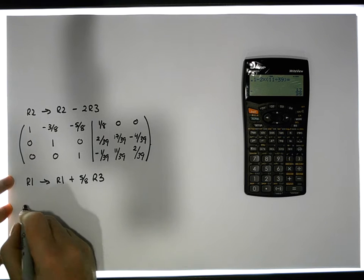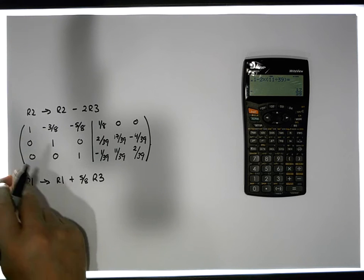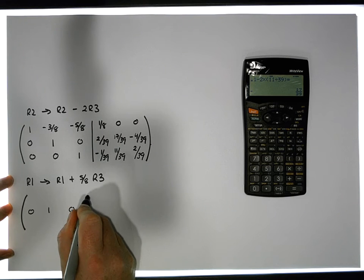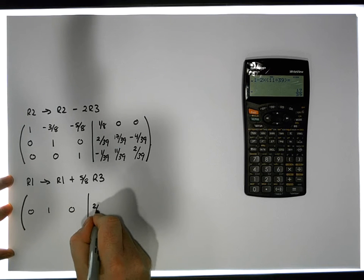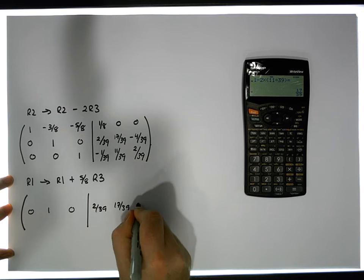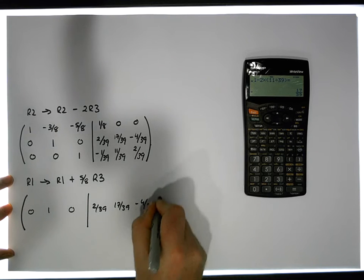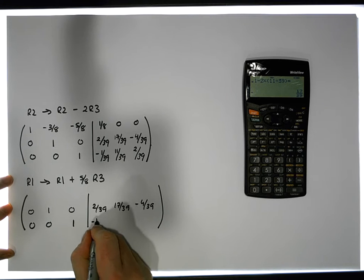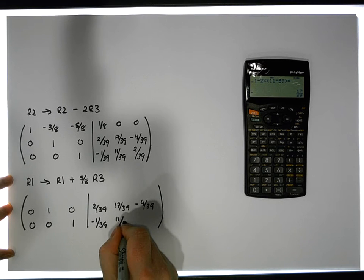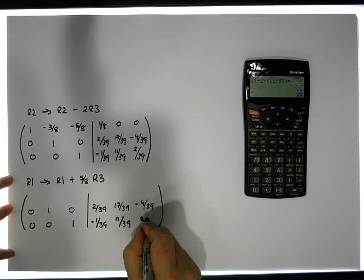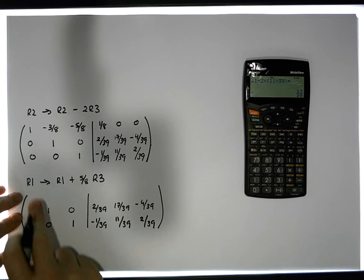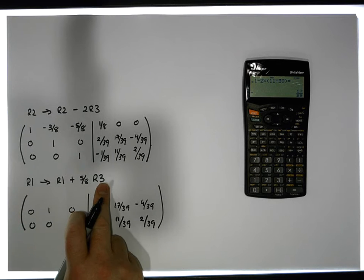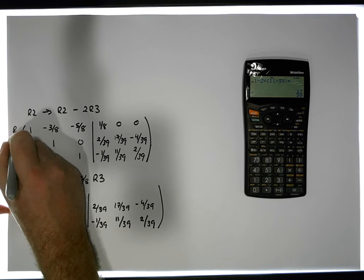So if I do this, the only thing that's changing is row one — everything else remains the same. Row two is zero, one, zero, then 2.29, 17.29, minus 4.39. Row three is zero, zero, one, minus 1.39, 11.39, 2.39. And row one becomes row one's values plus 5/8 of row three.